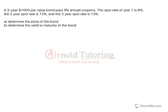The spot rate of year 1 is 6%, the 2 year spot rate is 12%, and the 3 year is 13%. I'm going to place that in a table really quickly, and I'm going to call the spot rates S sub T, but you can use whatever notation you like.